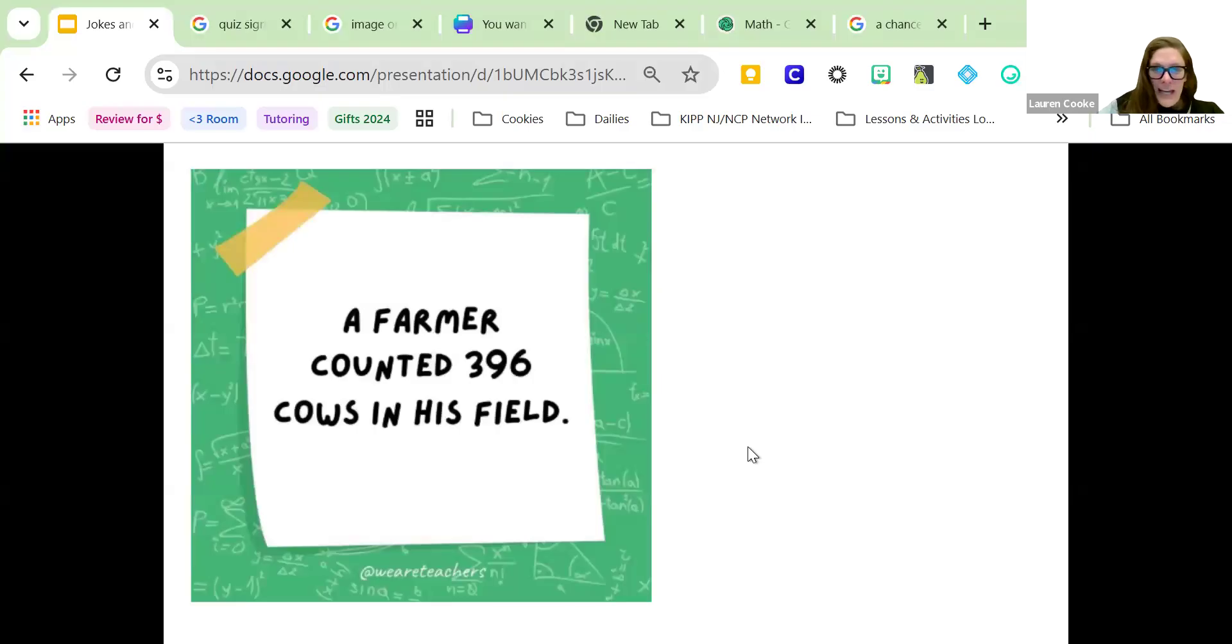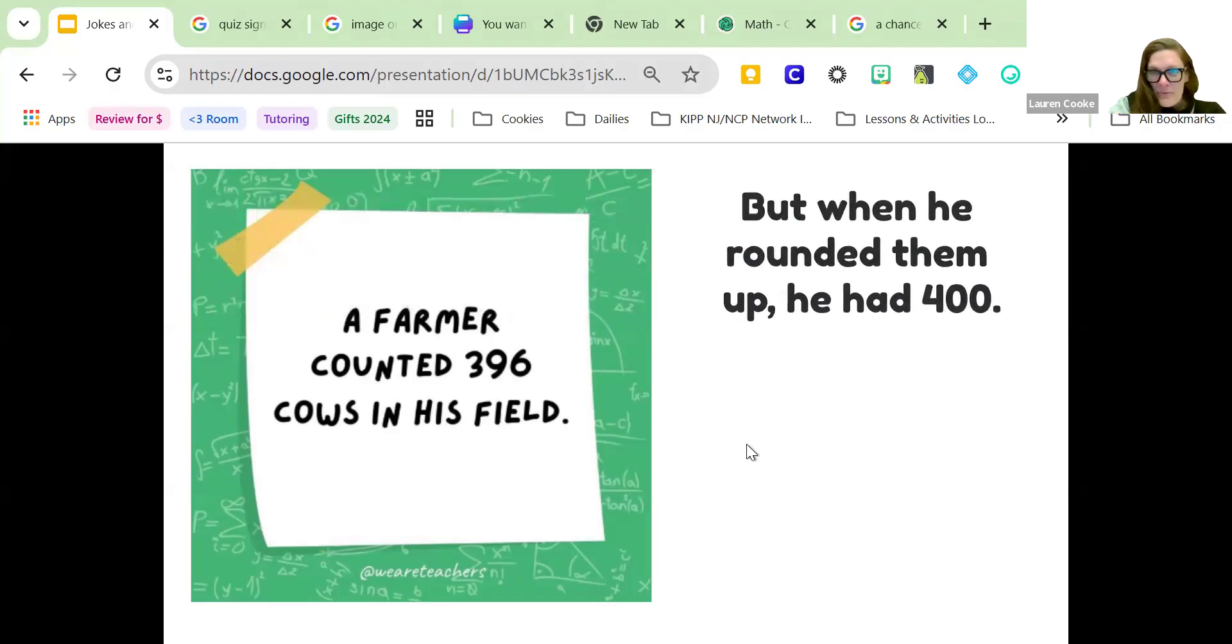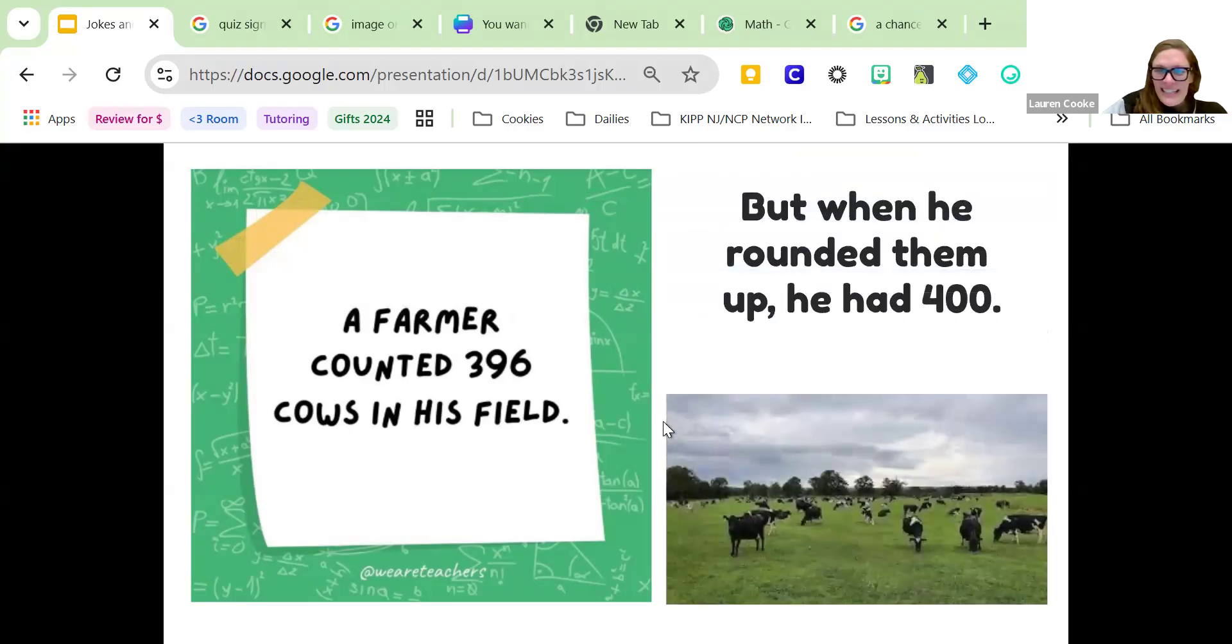A farmer counted 396 cows in his field, and we've been talking a lot about this, so I thought it would be hilarious. But when he rounded them up, which obviously means like collect them and gather them to go back into his farm, he had 400 because he's rounding up, which is math terms, but really he has 396. Look, so many cows.